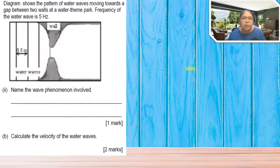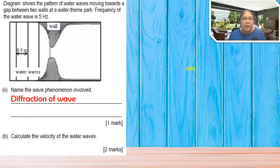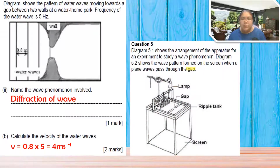Name the wave phenomena - it is diffraction of the wave. Now calculate the velocity of the water wave using the formula v = fλ. So v equals 5 Hz multiplied by 0.8 m, giving 4 ms⁻¹.